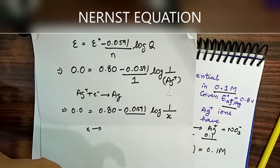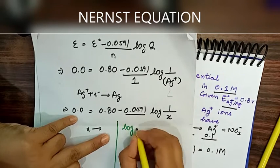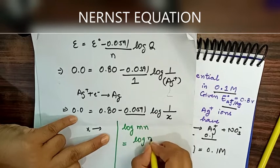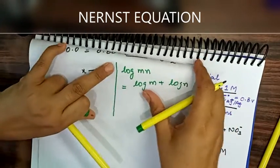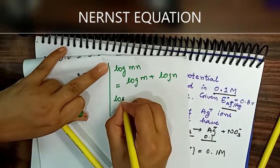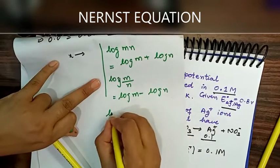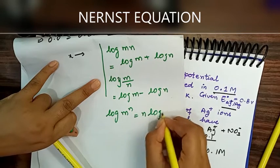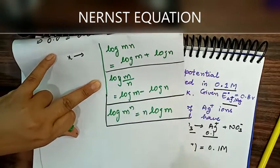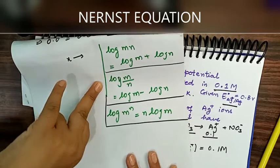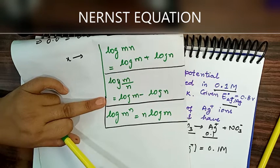For reference, the three key log formulas are: (1) log(mn) = log m + log n, (2) log(m/n) = log m - log n, (3) log(mⁿ) = n log m. These formulas and more tricks for calculations will be explained in detail in the next video on log and anti-log. Thanks for watching.